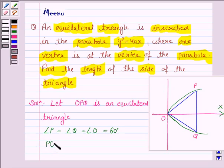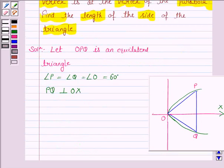So, PQ is perpendicular to OX. So, PBO is the right triangle.